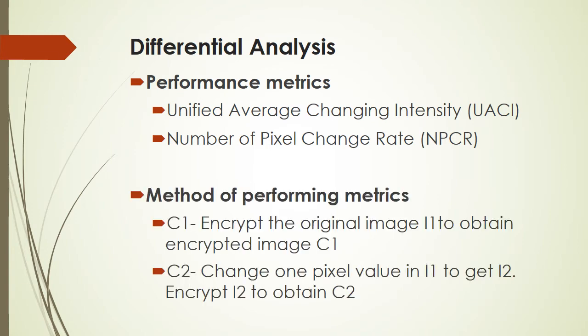The preliminaries required to measure UACI and NPCR are two cipher images, c1 and c2. c1 is obtained by encrypting the original image i1. To obtain c2, we first change one pixel value in i1 to get i2, then i2 is encrypted to get c2.